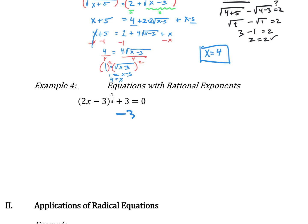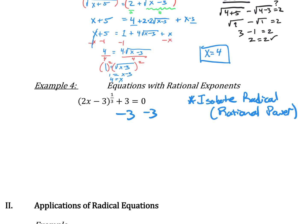Keeping in mind that a 1/3 power means cube rooting, we're going to see something interesting. Let's isolate the rational power, which is really a radical. Let's get that 1/3 expression by itself — subtract 3. We get the expression to the 1/3 power equals negative 3.